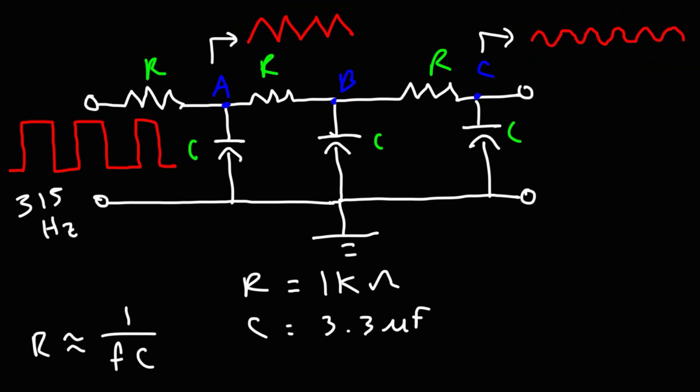So that's how you can make a sine wave from an incoming square wave — by using an RC filter network with three stages.